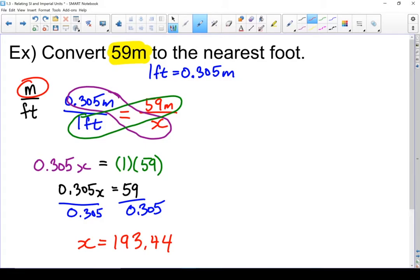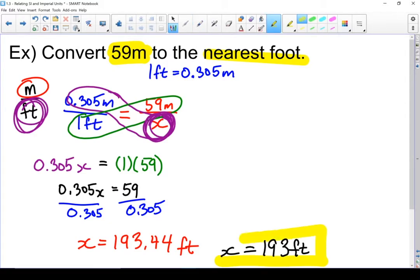Now's the point where I need to start looking for my unit. The x was on my bottom of my cross multiplying. Feet is on the bottom of my cross multiplying. So this must have a unit of feet. The other thing we need to look at it asks us to convert it to the nearest foot. So we're going to round it off to 193 feet. There's our answer.